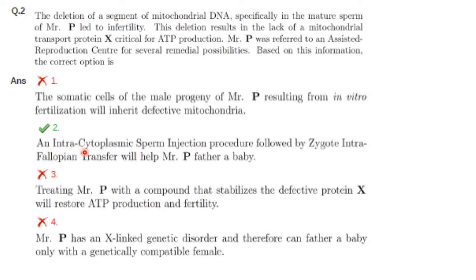Option 2 is the correct option: an intracytoplasmic sperm injection procedure followed by zygote intra-fallopian transfer will help Mr. P father a baby. Intracytoplasmic sperm injection is an assisted reproductive technology used to treat sperm-related infertility by injecting a single sperm into a mature egg. Zygote intra-fallopian transfer is then used for the zygote to implant in the uterus and develop into a fetus.